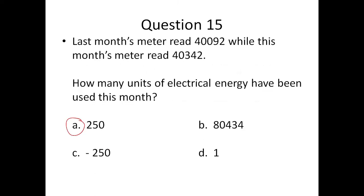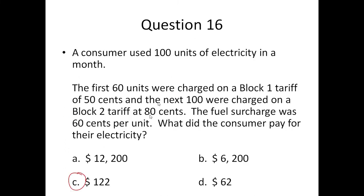Question fifteen: the number of units used is the difference between the two meter readings, which gives you 250 — that's A. Question sixteen: you multiply 60 units by 50 cents, then multiply the remaining 40 units by 80 cents, then multiply all 100 units by 60 cents for the fuel surcharge. Add them all up and you get $122, which is C.